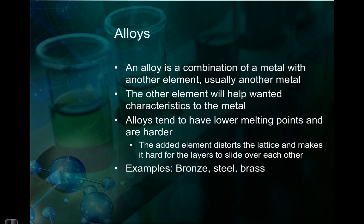If we have an alloy, an alloy is a combination of a metal with something else — usually another metal, but sometimes it can be things like carbon. The other element will give characteristics to the metal. We can make the melting point lower, or we can make it harder. When we put an added element into that structure, into that metallic bond, it distorts the lattice and it actually makes it very hard for those layers to slide over each other.